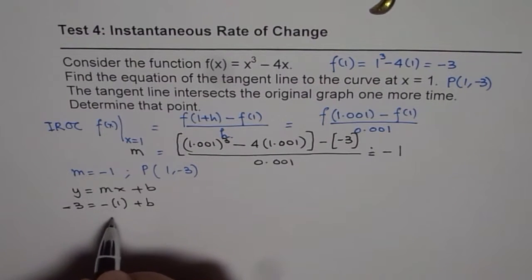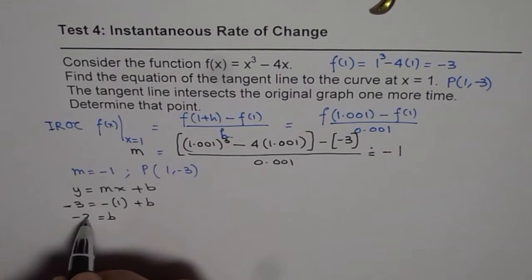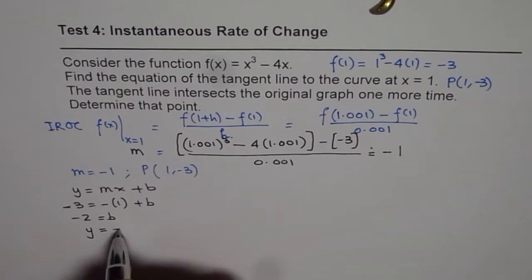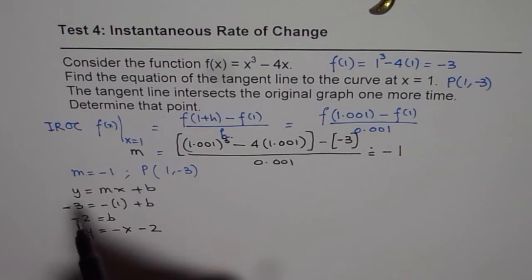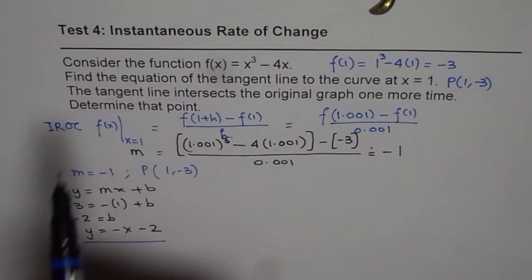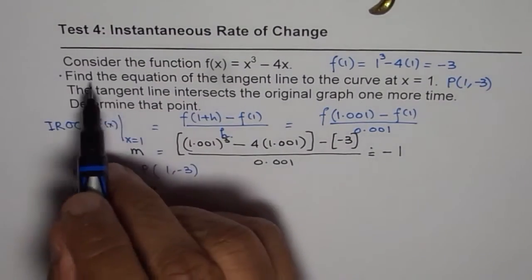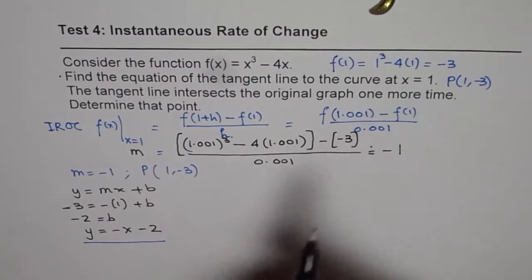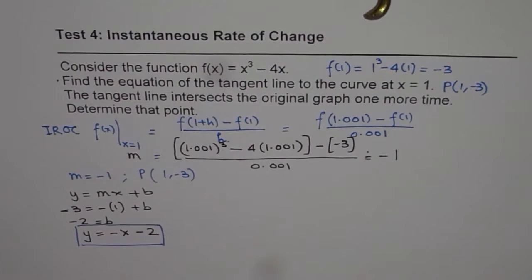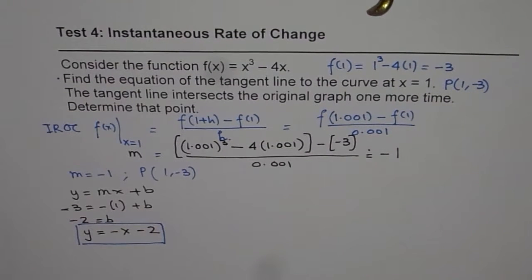So, we can solve for b. So, b is equals 2. When we take it on this side, b is minus 2. And therefore, the equation of tangent is y equals slope is minus 1. So, minus x minus 2. So, this is the equation of tangent. So, that is this part, which is find the equation of the tangent line to the curve at x equals 1. So, that is y equals minus x minus 2.